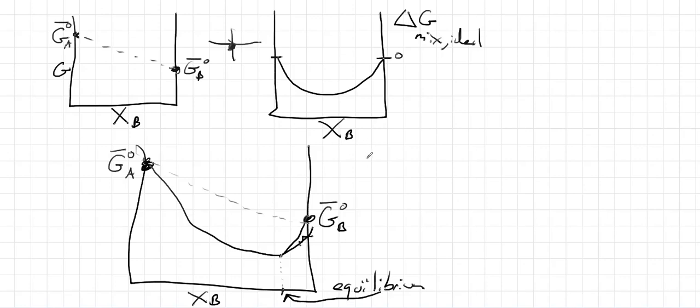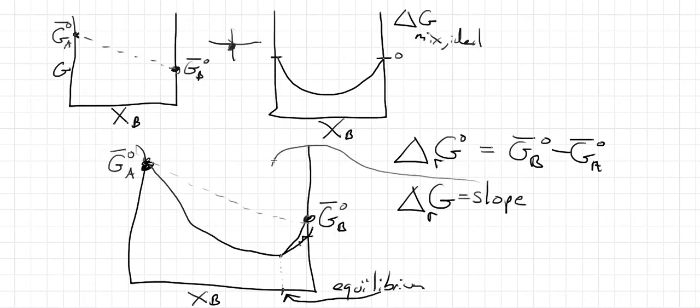And so we should differentiate between two different things. Delta G standard for a reaction, which in this case we said was the Gibbs function of pure product minus the Gibbs function of pure reactant. And something new, delta G, not delta G standard, which we're going to define as the slope of this graph. The slope of the reaction progress graph. And notice that the slope is negative here.